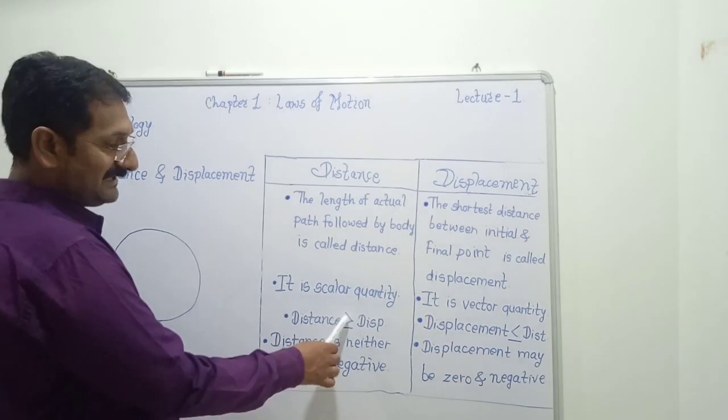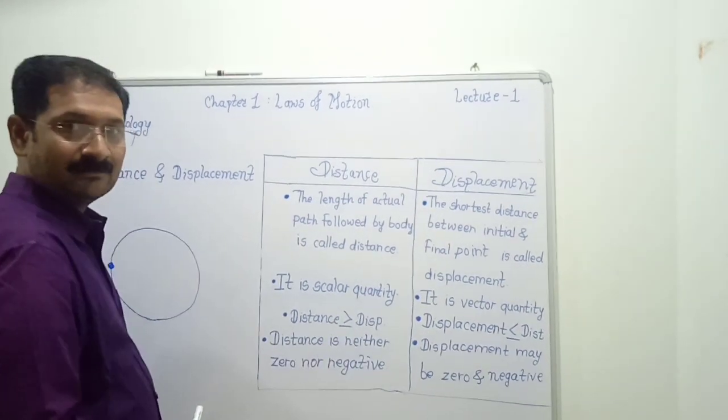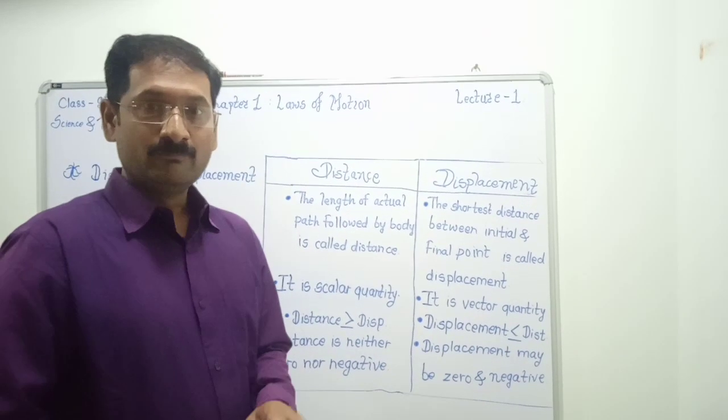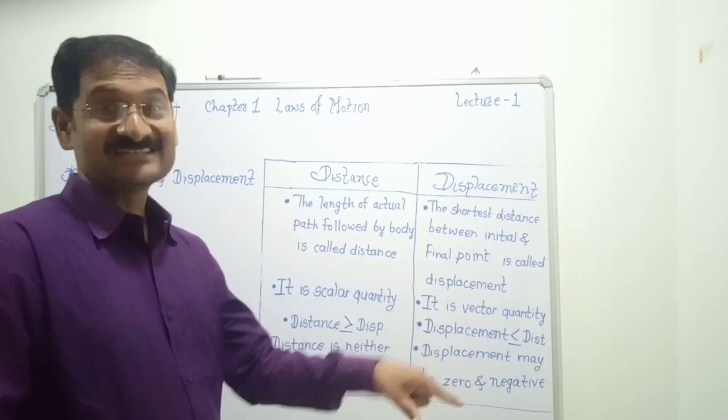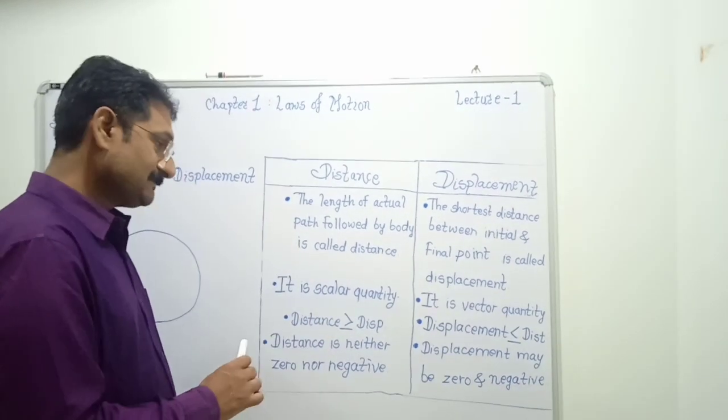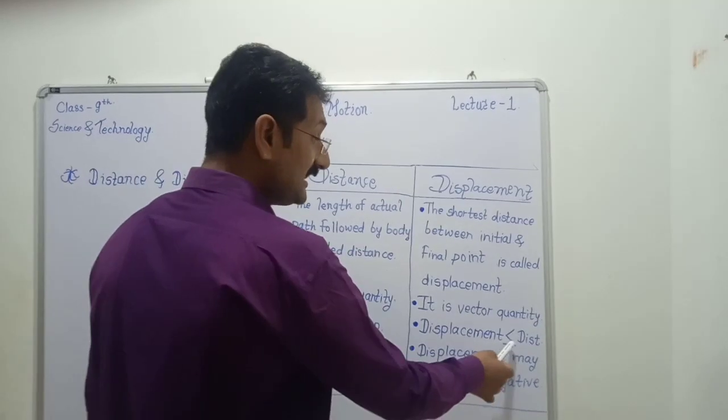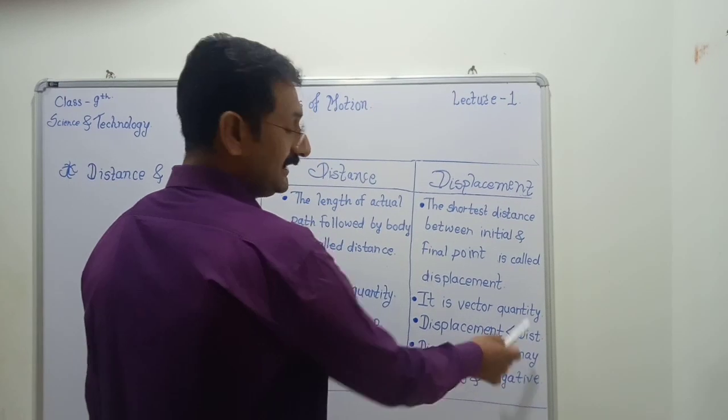distance is always greater than or equal to displacement. But when both are in the same direction, both distance and displacement are the same. Displacement is always smaller than or equal to distance.